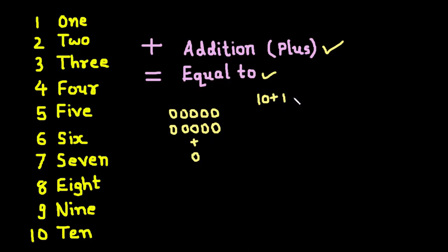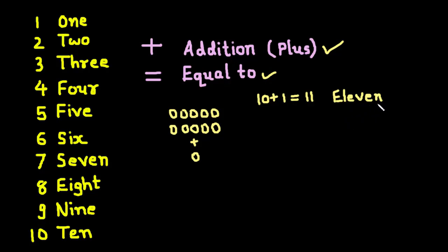And what will we get? 10 plus 1 is equal to 11. Now we have 1 on the unit place and 1 on the 10's place. It is called 11. This is the second two-digit number.